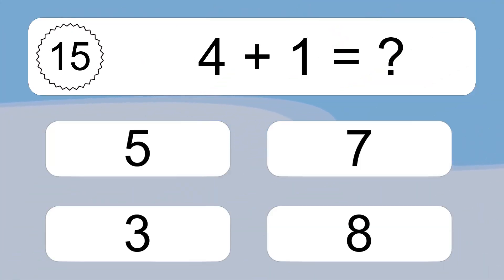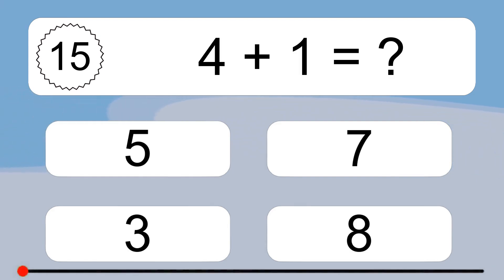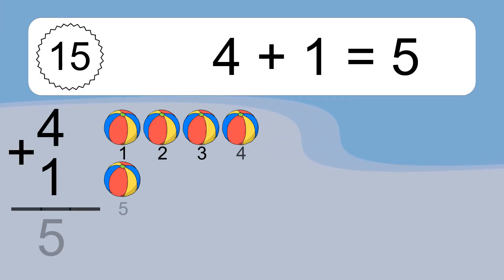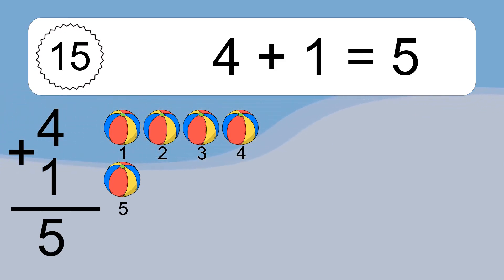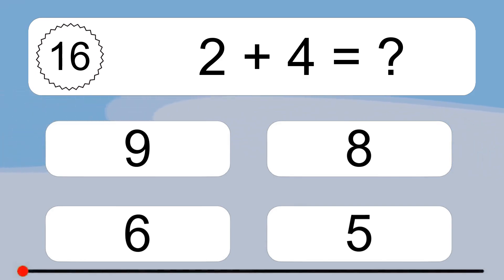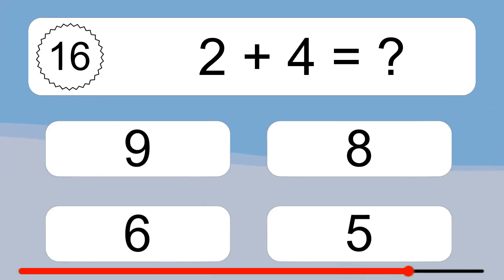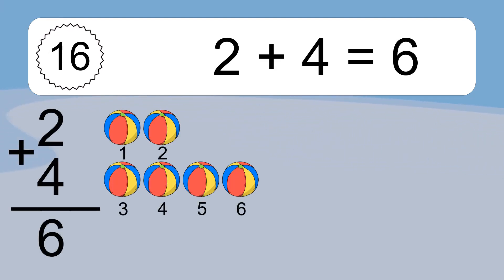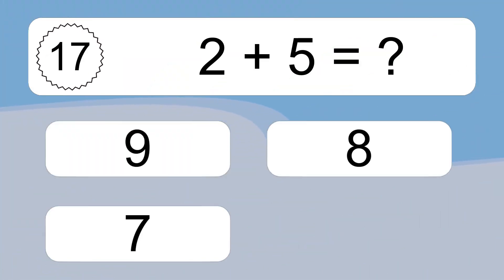4 plus 1 equals what? 4 plus 1 equals 5. Let's count it: 1, 2, 3, 4, 5. 2 plus 4 equals what? 2 plus 4 equals 6. Let's count it: 1, 2, 3, 4, 5, 6. 2 plus 5 equals what?